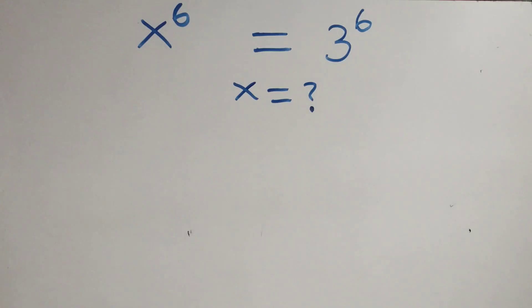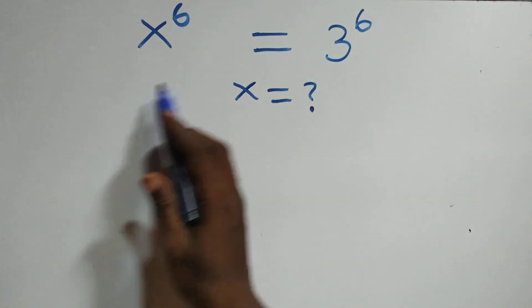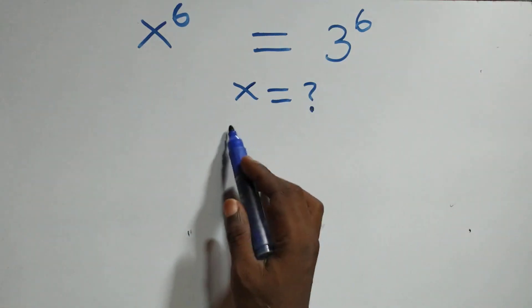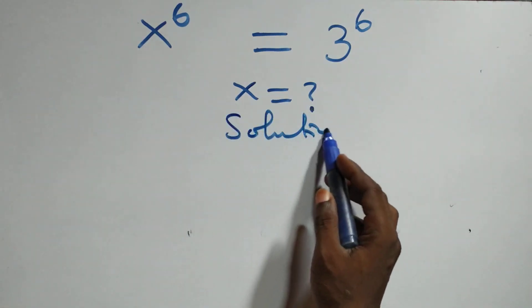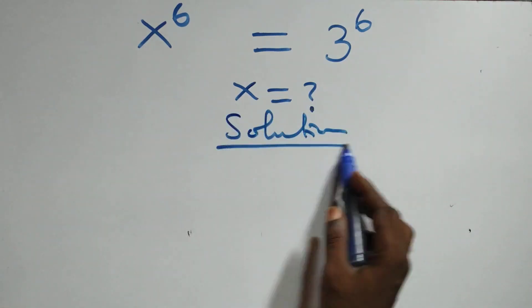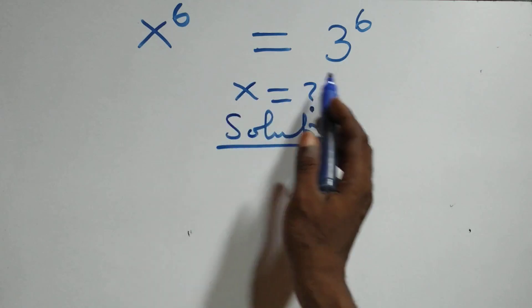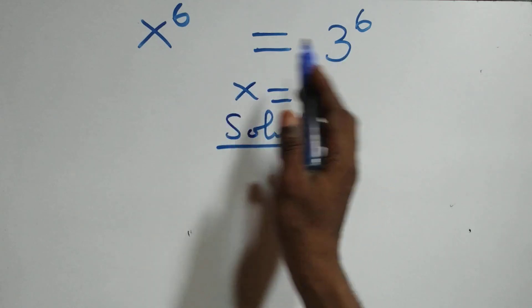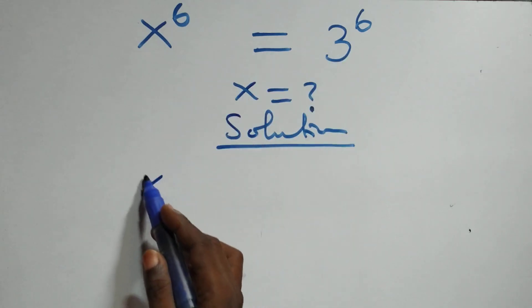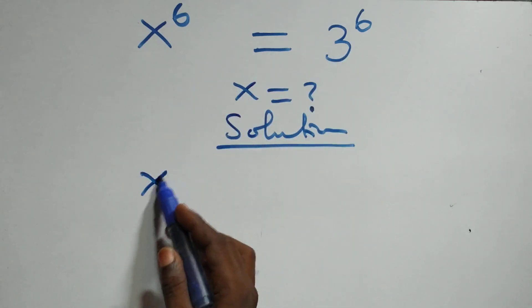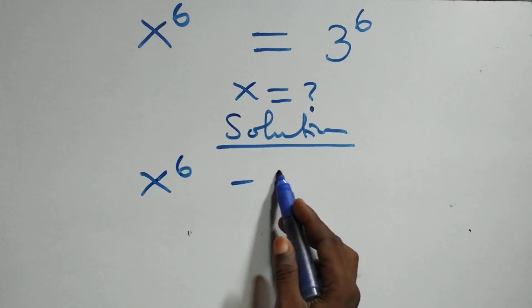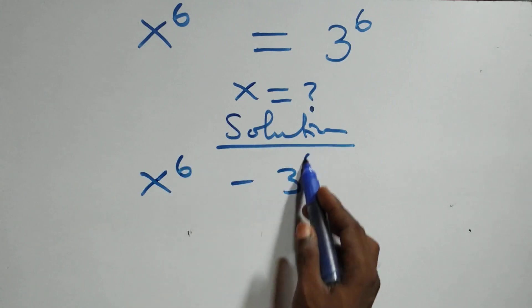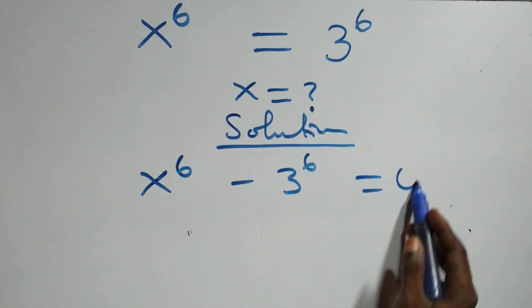Hello, you are welcome to this exponential equation solution. From what we have here, we can take 3 raised to power 6 to the left hand side. That is, we have x raised to power 6 minus 3 raised to power 6 equals to 0.